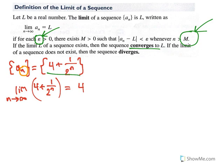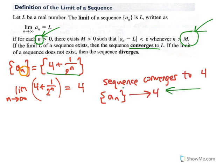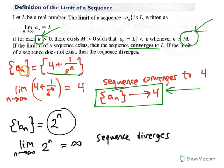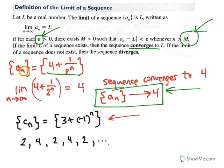Here's an example of a sequence that diverges. Do the terms of this sequence approach a particular number as n gets larger and larger? The answer is no, because what happens as n grows is that the terms go to infinity, and infinity is not a number, so this sequence diverges. In another example, a sequence whose terms alternate between 2 and 4 also diverges, because no matter how large n is, the terms don't approach any particular number — they just oscillate between 2 and 4.